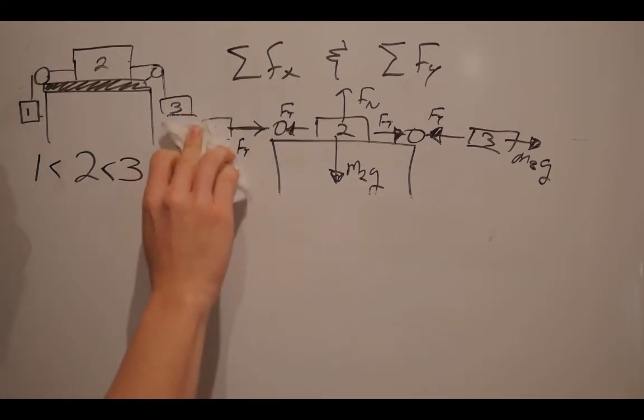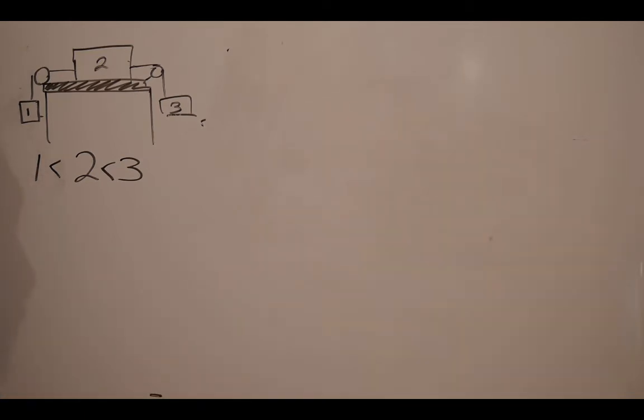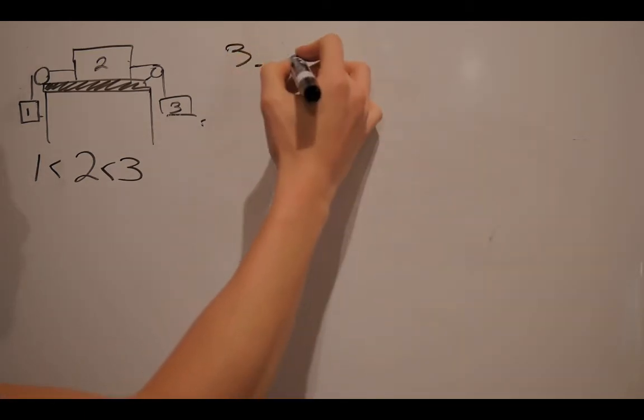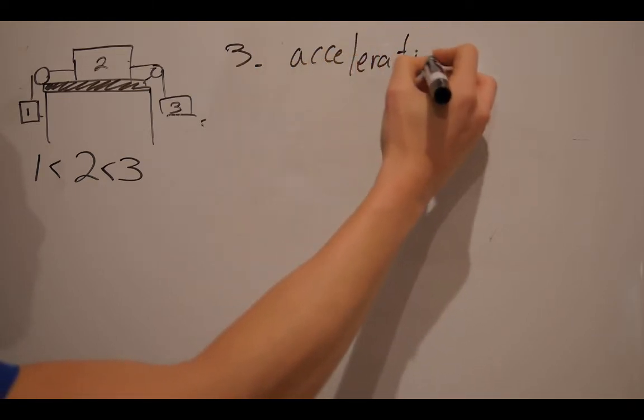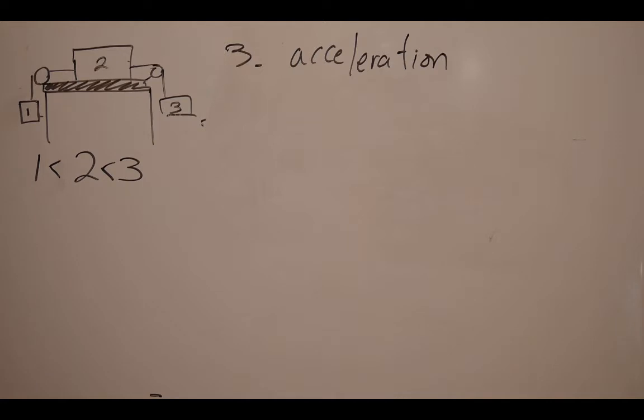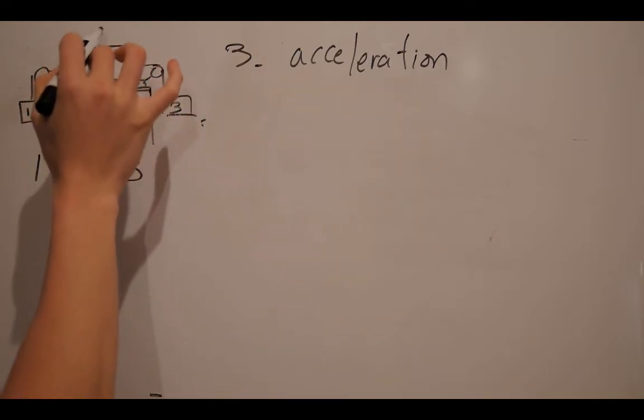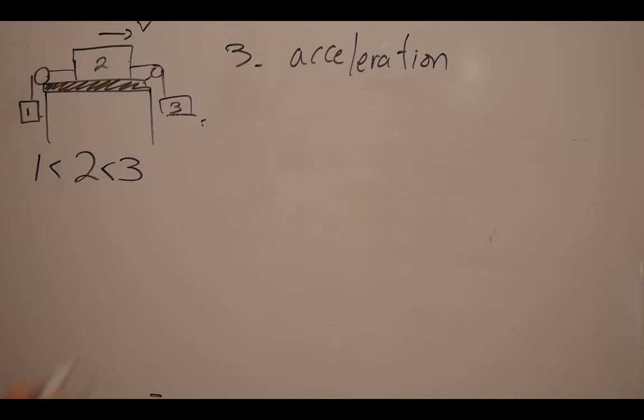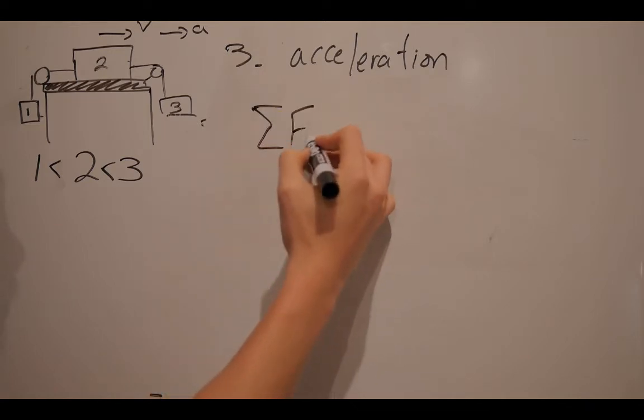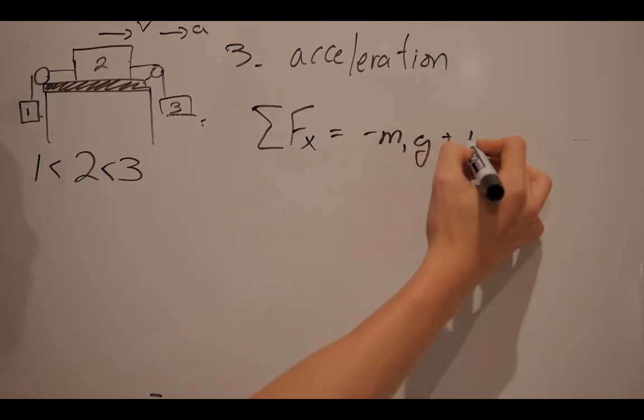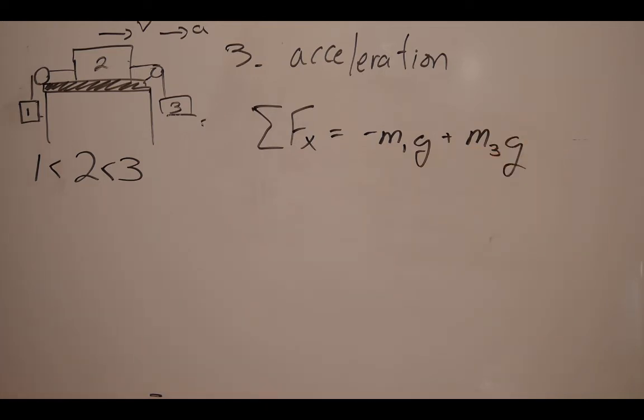Now, from there, we can calculate the acceleration of the masses. Now, if I take a look at this, I know that m2 is going to be accelerating to the left or to the right, because m3 is going to drag the entire system. And so, because this is moving to the right, that's where the velocity is headed. Also, that's where the acceleration is headed. Therefore, I'm going to use my x net force equation, negative m1g plus m3g.